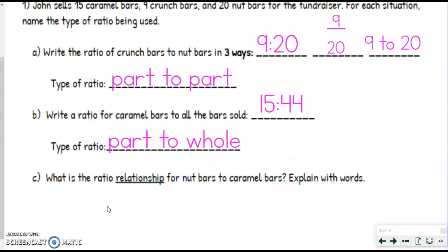So when we do this, we are always going to say for every, and then talk about the first part, so in this case, nut bars, and then we'll say there are, or there is, and then talk about the second part. So here's what I mean.